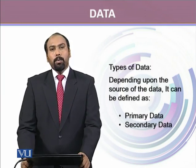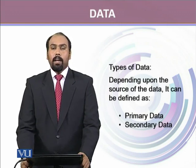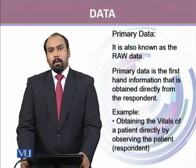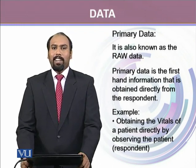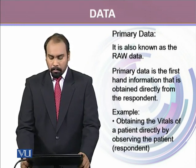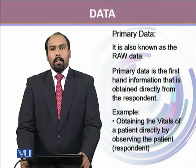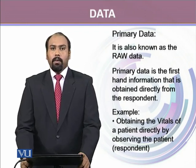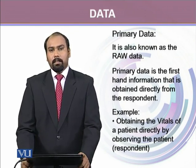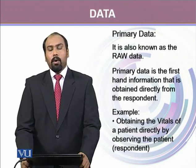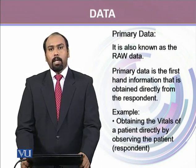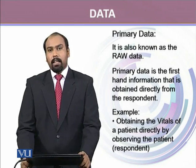There are two different types of data depending upon how we collect them. The first type is known as primary data. Primary data is called the raw data — this is the first-hand information obtained for our study. For example, when a patient visits a hospital and the doctor or nurse takes vitals directly from the patient, that is called primary data, which is raw, first-hand information.